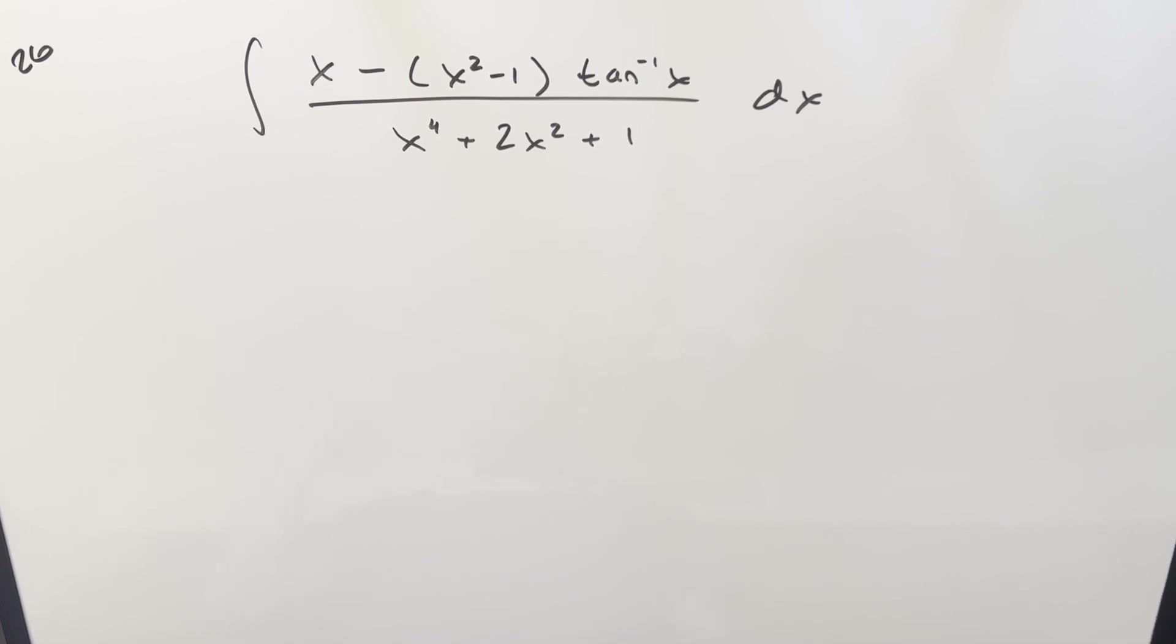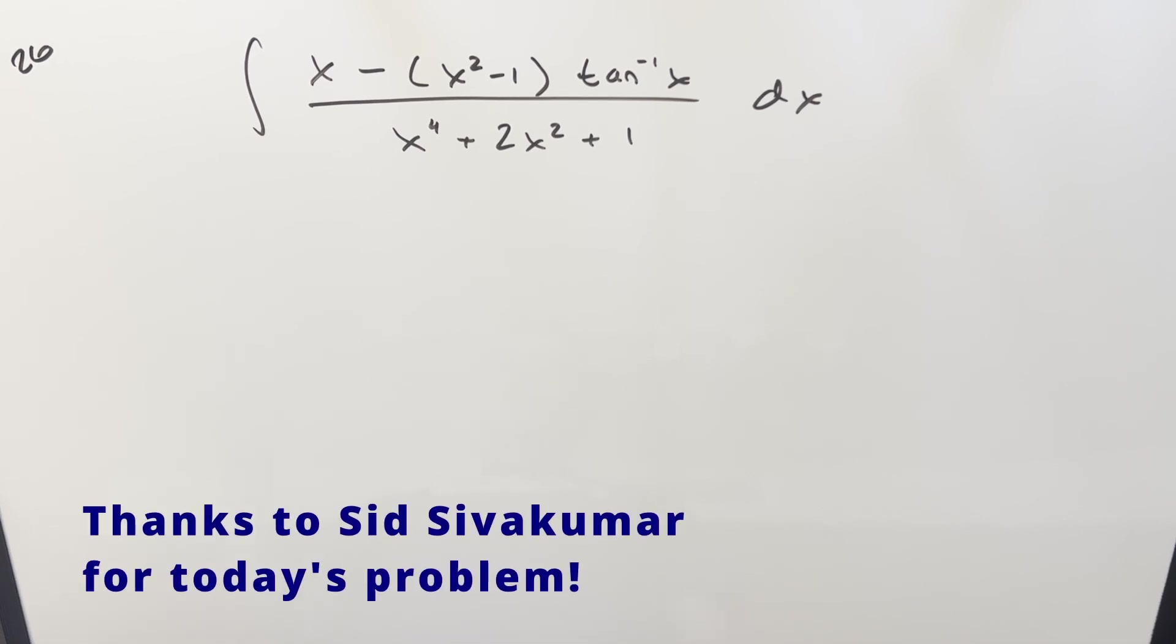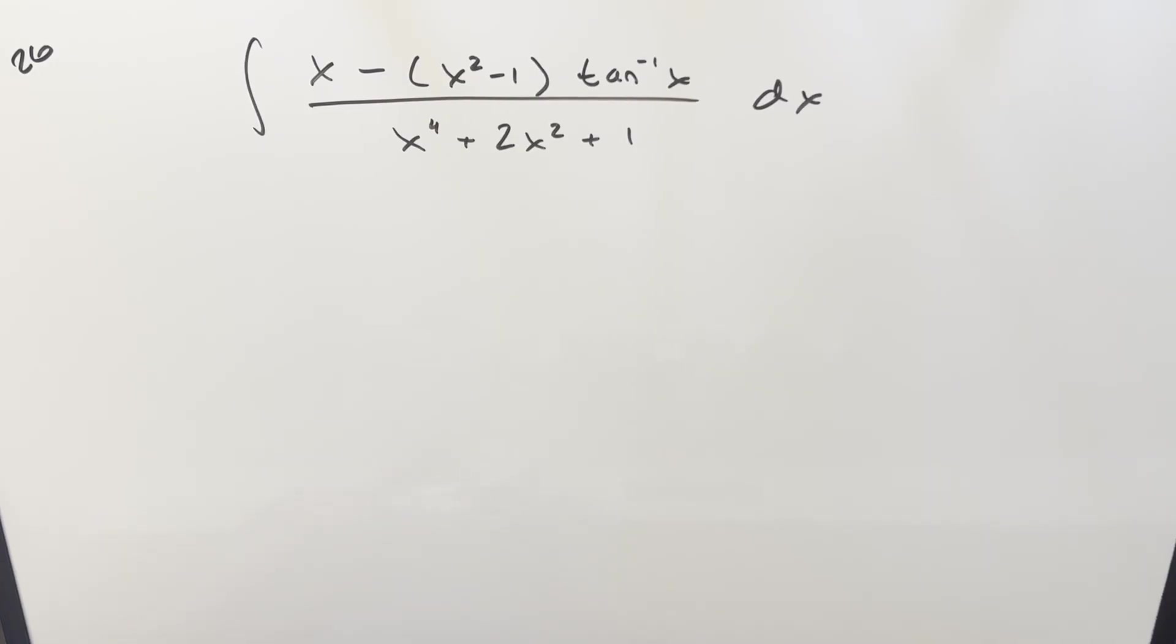Okay, we have here today a really interesting integral. This one was sent to me by SID. We've got the integral of x minus (x² - 1) arctan(x) over (x⁴ + 2x² + 1) dx. Okay, I think my first step is pretty easy. It's just this denominator. We can definitely factor this. This is going to be a perfect square. So what we actually have here is (x² + 1)² all squared. So let me just rewrite this using this thing as our denominator.